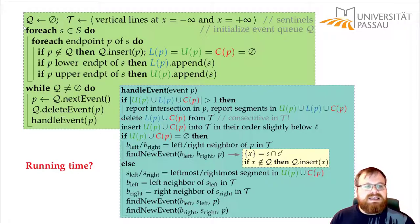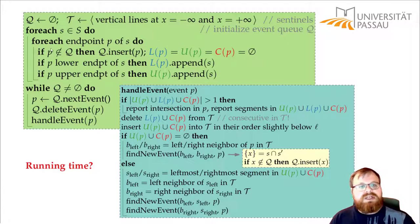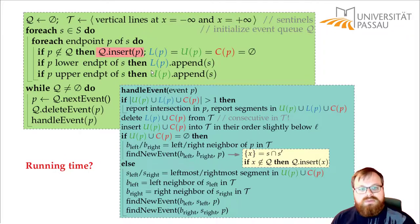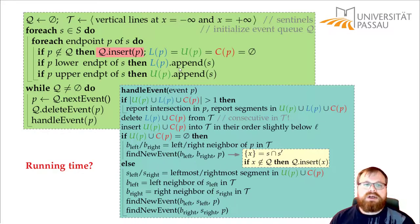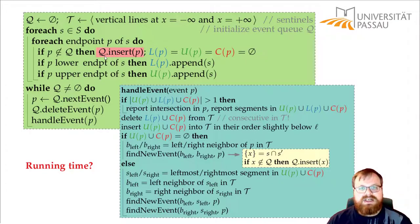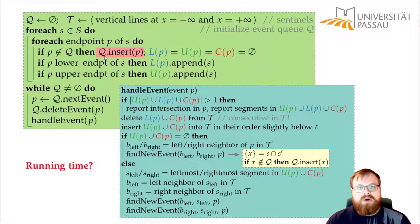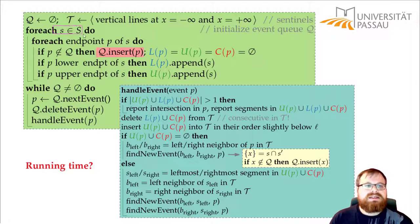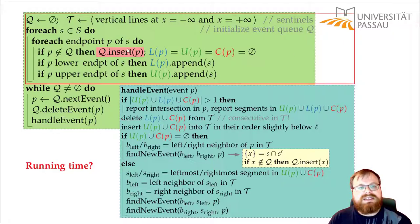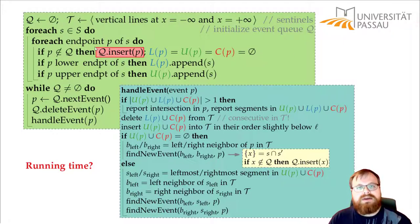At the very beginning, we look at all the segments and all the endpoints of them. And for each such endpoint, we insert it into our priority queue. Then we also insert the segments into some sets of the points, but that doesn't take much time. Inserting something into our priority queue, which we implemented by a balanced binary search tree, takes logarithm of the number of points in the queue. So we have n segments, we have n points here, so this takes at most order of n log n time in total.